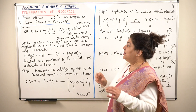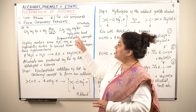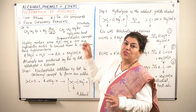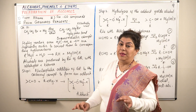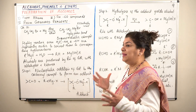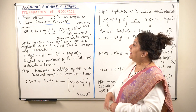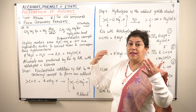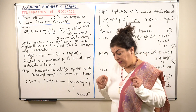If you look at this Grignard reagent, the carbon is joined with magnesium by a covalent bond. This bond is highly polar because the electronegativity difference between carbon and magnesium is very high — so it's a highly polar covalent bond tending towards ionic, yet covalent. The bond between magnesium and bromine, however, is essentially ionic, since it involves a strong metal with a strong non-metal.